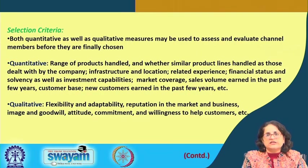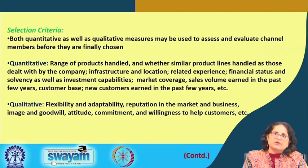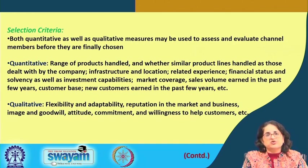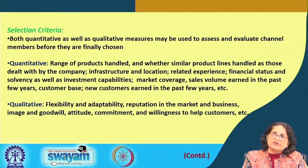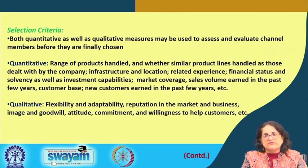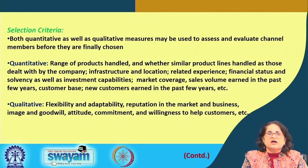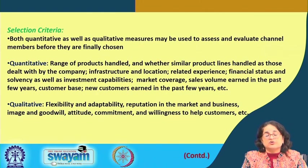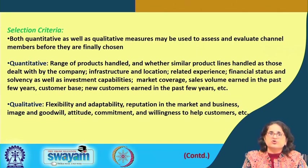The selection criteria for channel partners can be qualitative and quantitative. Qualitative criteria include flexibility and adaptability, reputation in the market, image, goodwill, attitude, commitment, and willingness to help customers. Quantitative measures include the range of products handled and whether similar product lines are dealt with, infrastructure and location, related experience, financial status and solvency, investment capabilities, market coverage, sales volume earned in past years, customer base, and new customers earned in past years — all of which can be criteria for evaluating channel members before choosing them as partners.